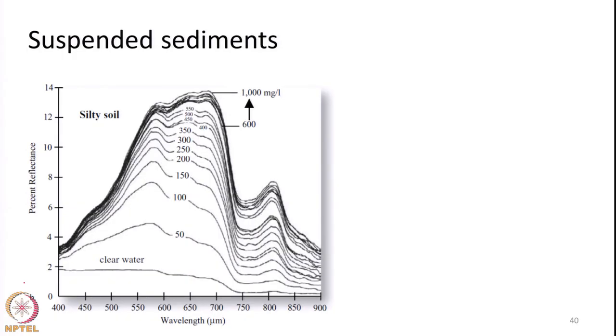This is an important thing we should remember. But in general, any presence of suspended matter in a water body will increase the reflectance in almost all wavelengths. Here again in this slide, one more example is given showing how the reflectance changes with increasing concentration — you can see that the wavelength of peak reflectance shifts towards longer wavelengths with increasing concentration.